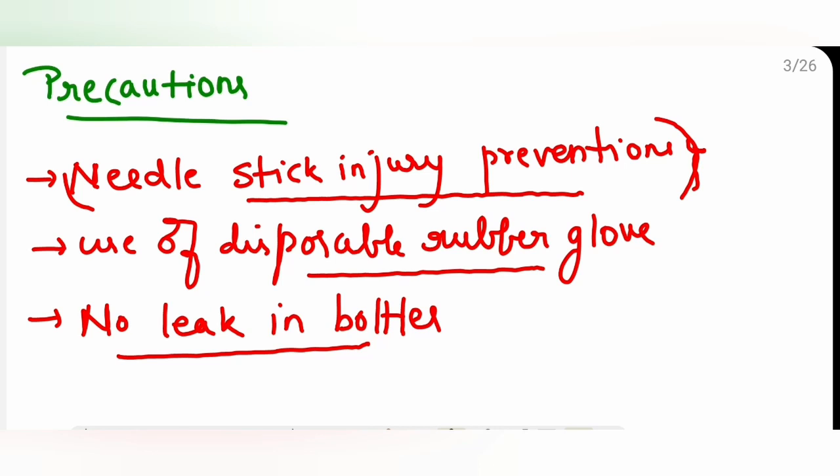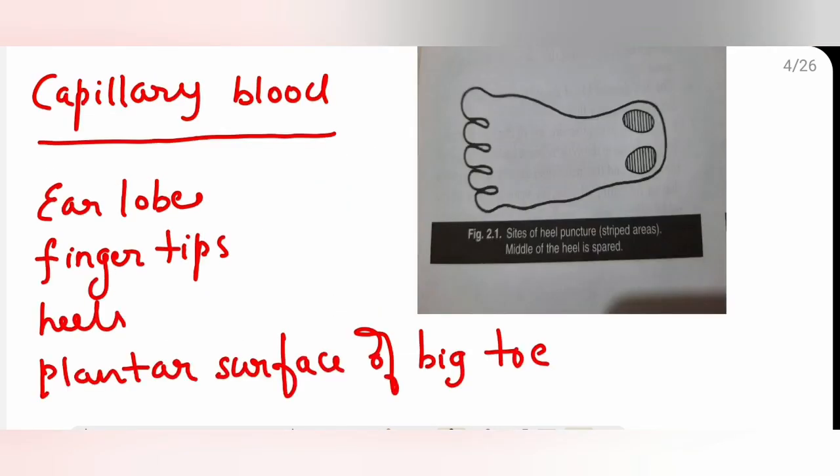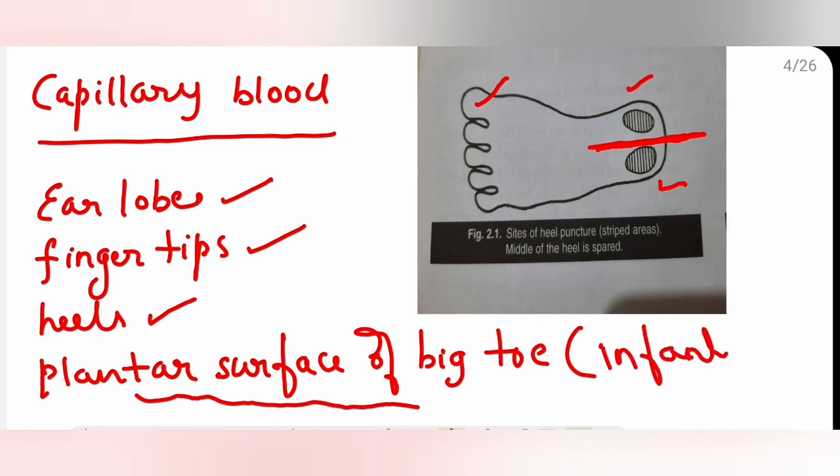Let's see capillary blood. Capillary blood can be collected from ear lobes or fingertips or from heels. Heels, not from the middle portion, but from either medial or lateral. And plantar surface of the big toe. Usually we do it in infants. These are the sites for collecting the capillary blood.